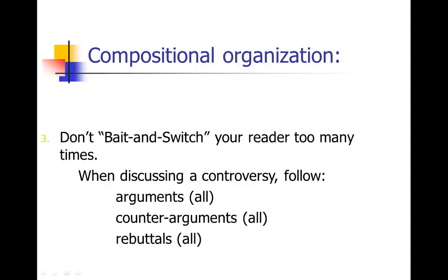A little tip about discussing controversies, which often is what you're discussing in scientific articles: be careful about what I call baiting and switching your reader. Don't do that too many times. When discussing a controversy, you'll have an argument, a counterargument, and a rebuttal. A typical way people frame that is: here's argument A, here's the counterargument to A, here's the rebuttal to that counterargument, and then let me start the whole sequence again for B and then for C. That ends up being much harder on the reader because you're going back and forth pro and con too many times — very confusing. A better way to organize those kinds of discussions is to put all of the pro arguments first, then all of the counterarguments, then all the rebuttals. So A, B, and C, then the counterarguments to A, B, and C, then the rebuttals to all of those. That ends up being a little bit easier on your reader.